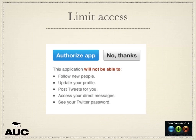This is an example of the limited access Twitter provides. Twitter has three different types of access: read, read/write, and read/write with direct messages. Twitter isn't very complicated so it doesn't need a complicated set of permissions. Facebook, however, has more permissions than you could poke a stick at.